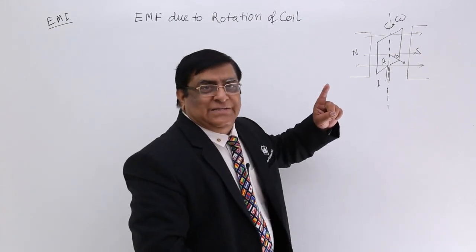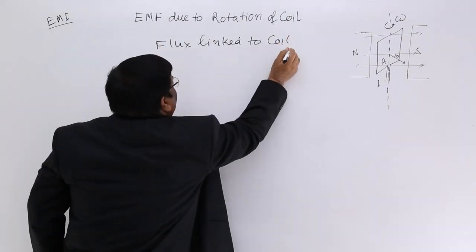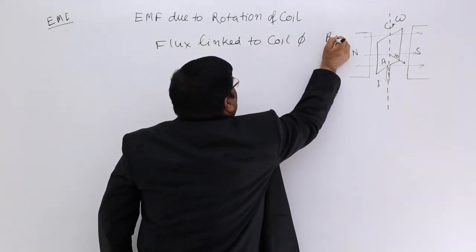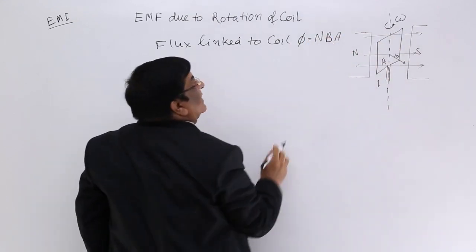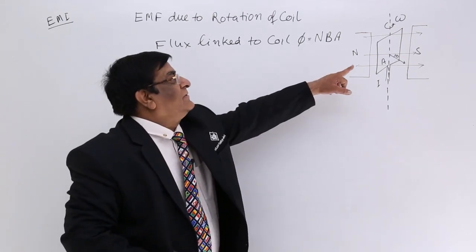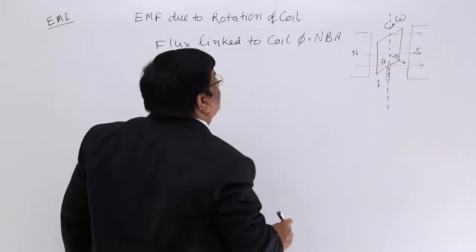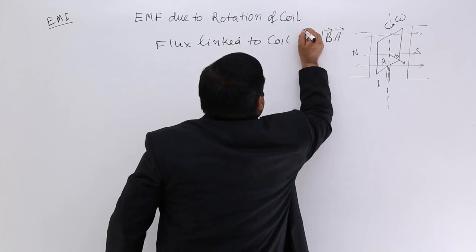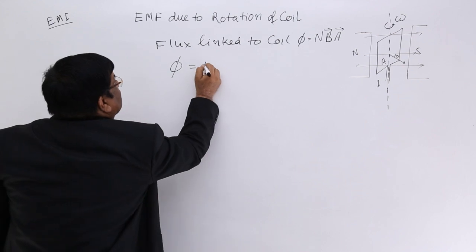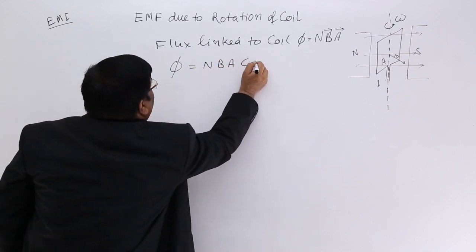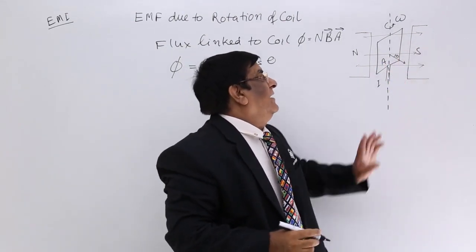Does it make any difference? The answer is yes — it makes a difference because the flux linked to this coil, we know the definition: flux is B into A. But we have made N turns here, so the total flux becomes NBA. Because this is not at right angle, we write the complete magnitude: phi is equal to N, B, A, cos theta. Theta is the angle between area vector and magnetic field B.